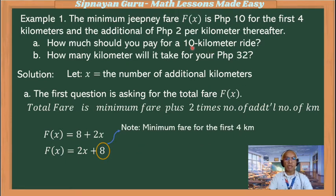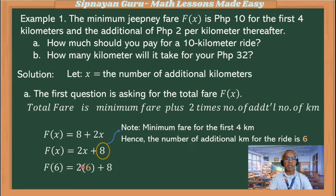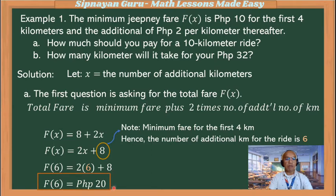For the 10-kilometer ride, the additional number of kilometers is 6. We substitute that into the function: f(6) = 2 times 6 plus 8, which gives 14 plus 8, which equals 20. Therefore, you will pay 20 pesos for a 10-kilometer ride.